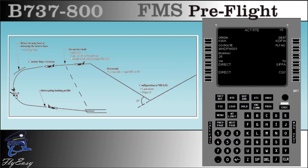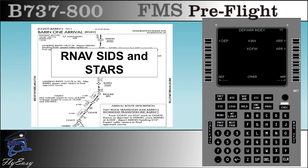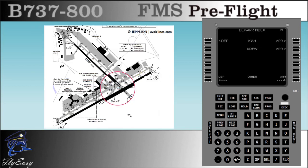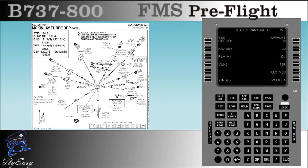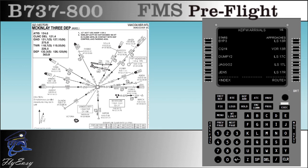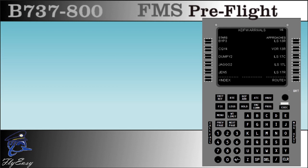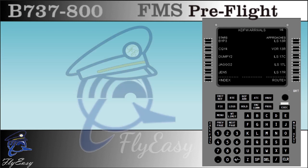Press the departure or arrival key; use it after the route is loaded to select the departure runway, SID, and transition data. Select line select key 1 left for departure information. You can see the list of departures by use of the next and previous page keys. Press the departure or arrival key again to display the arrival STARs; press line select key 2 right. This page shows the STARs, transitions to the STARs, approaches, transitions to the approach, and runways. Selection of each item is done through the line selection. Select the route prompt at line select key 6 right to return to the route page.